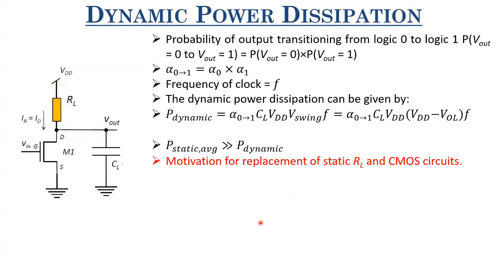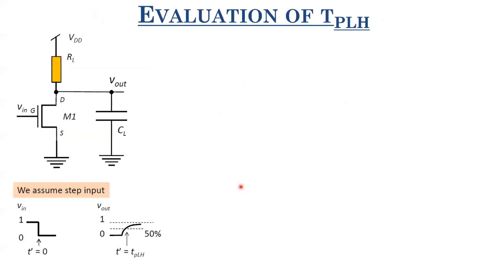Now let us discuss delay. For calculating delay, let us first discuss TPLH and TPHL, which are the components used to characterize propagation delay TP. For evaluation of TPLH, we apply or assume a step input. In the real world, the input won't be a perfect step — it will have a finite slope and finite rise/fall times, causing some leakage power dissipation — but here we assume a step input.